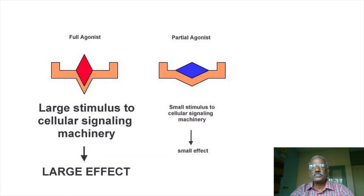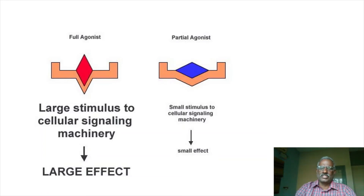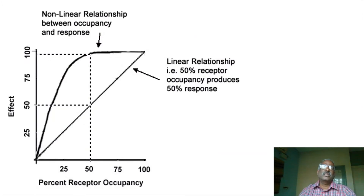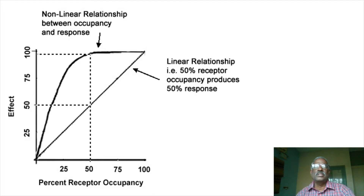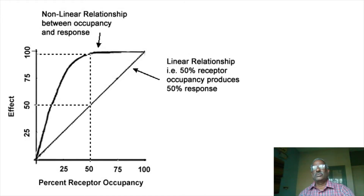The effect of a partial agonist is a small stimulus to the cellular signaling machinery, producing a small effect of an agonist or antagonist. The action depends upon the number of receptors occupied. If you have a receptor occupied, it will be very responsive — that is the drug-receptor interaction, called the drug receptor theory.